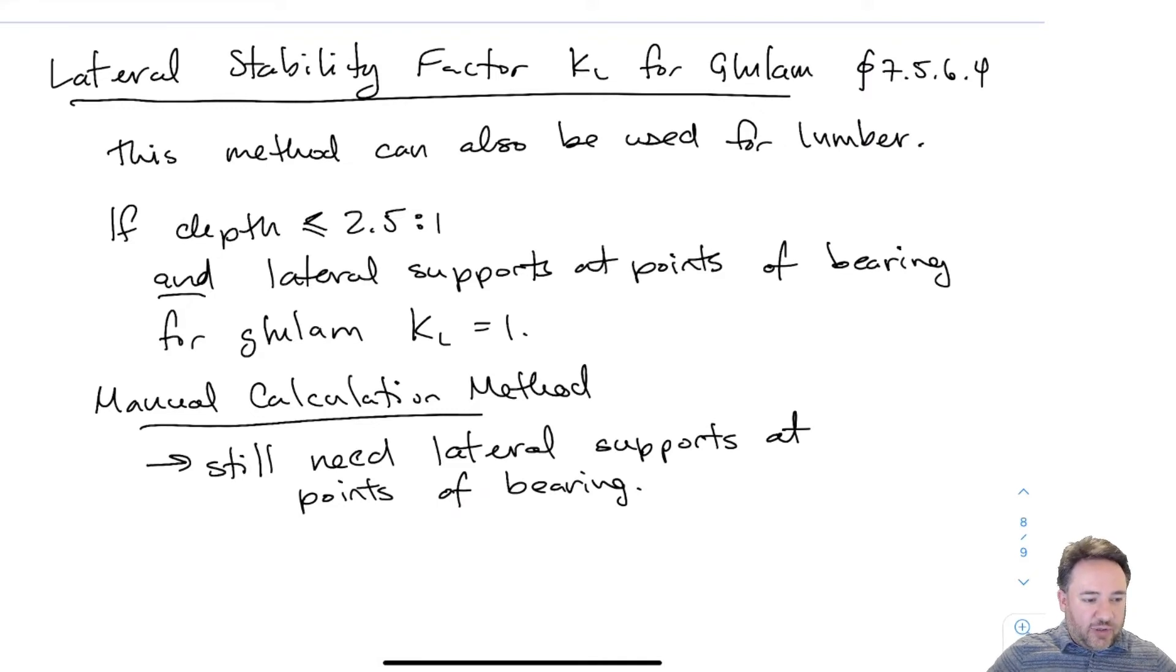Just like in lumber, there is one category where we can automatically consider KL equals 1. If the depth to width ratio of a glulam beam is less than or equal to 2.5 to 1, meaning the total depth divided by width is less than 2.5, then KL automatically equals 1, as long as lateral supports are provided at points of bearing to prevent lateral movement and rotation at those points.